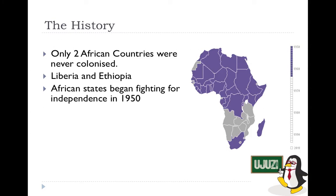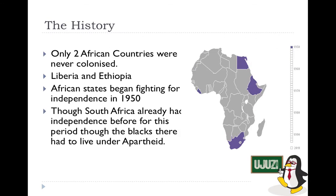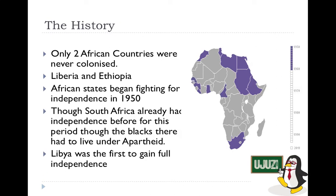Most African states that were colonized started fighting for independence in 1950. South Africa had a form of independence before 1950, but Black South Africans were subjected to apartheid. Libya was actually the first country in Africa to gain full independence, achieving this in 1951.